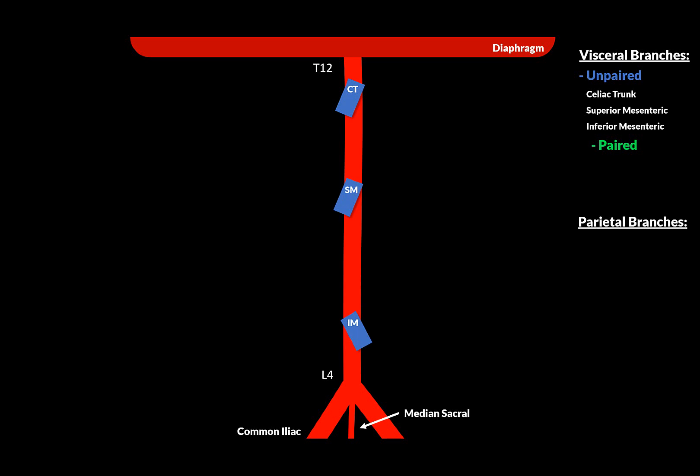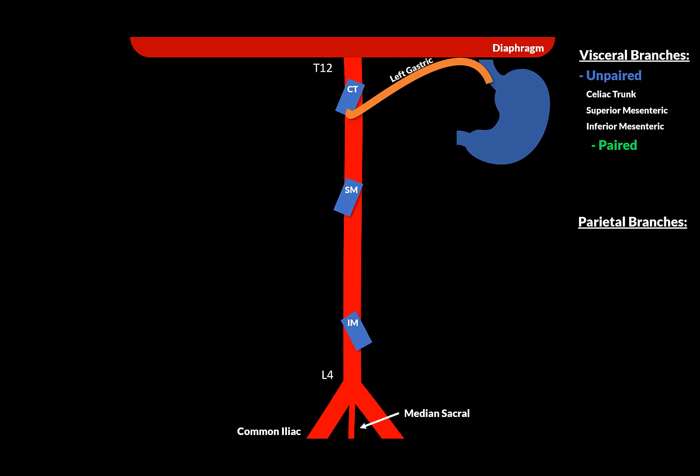Let's start with the celiac trunk. The celiac trunk is mostly associated with organs found in the upper abdominal cavity, and it has three major branches. The first is the left gastric artery. It goes upwards towards the abdominal part of the esophagus and then along the lesser curvature of the stomach to supply the stomach. It does supply the abdominal part of the esophagus, and it also connects with the esophageal branches of the thoracic aorta.